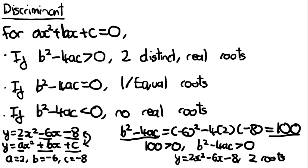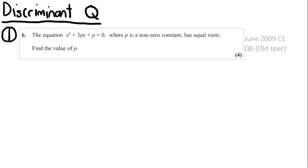The discriminant is something that will come up quite a lot in A-level, so it's useful to understand it and get used to it now. Here is a practice question on discriminants — pause the video, have a go at the question, and the answer will follow in about 5 seconds.